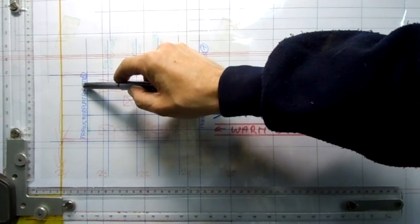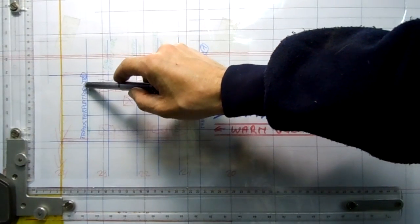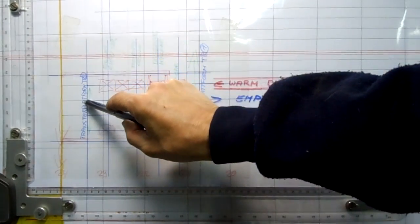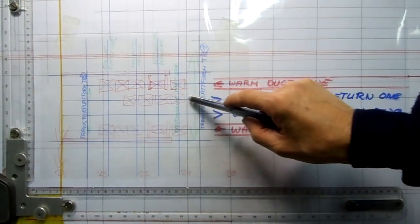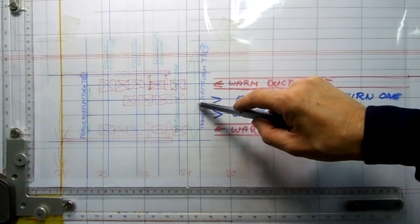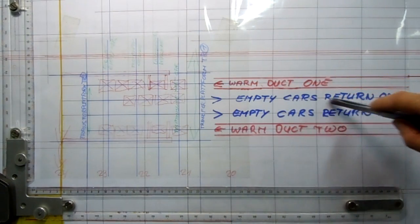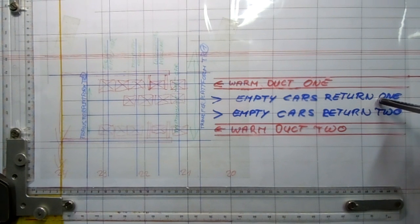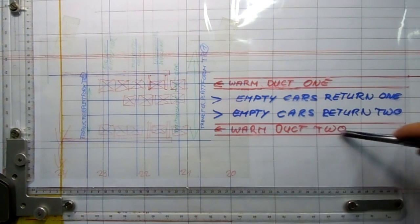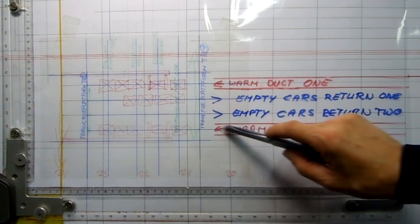Going to this transfer platform TR number three, gets one place shifted and runs down over here. The transfer platform makes the bridge to go. The empty cars return one, and the same line is over here, warm return.